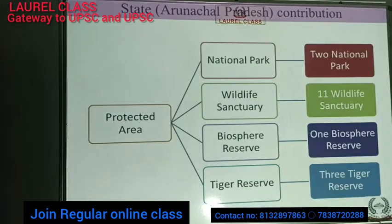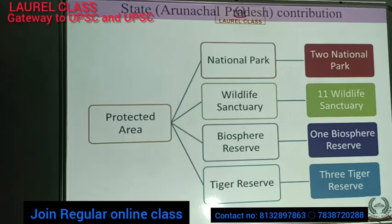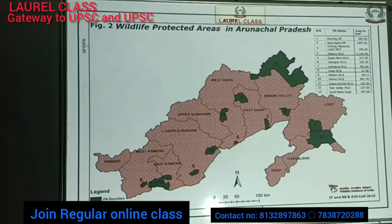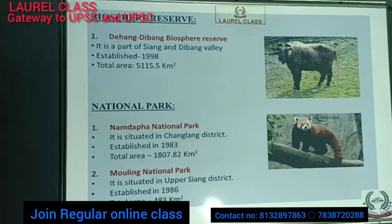For the state of Arunachal Pradesh, the Government of India has declared two national parks, 11 wildlife sanctuaries, one biosphere reserve, and three tiger reserves. These figures are important for your prelims. On the map — though it is an old 2015 map — you can see the different protected areas situated in different districts and parts of the state.